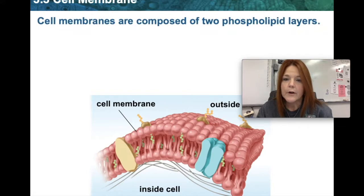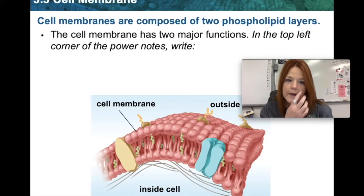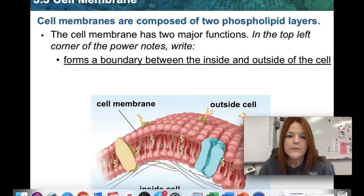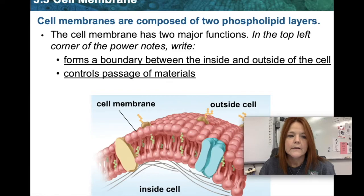Cell membranes are composed of two phospholipid layers. The cell membrane has two major functions. In the top left corner of your power notes, please write: it forms a boundary between the inside and outside of the cell. The second function is it controls the passage of materials.